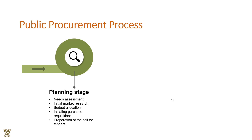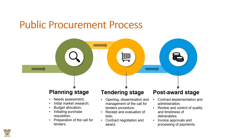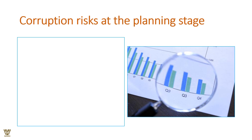Public procurement involves three stages: the planning stage — covering needs assessment, market research, budget allocation, and sustainable development goals; the tendering stage — opening and disseminating calls for procedures, receiving and evaluating bids, and contract negotiation; and the post-award stage — contract implementation and administration, review and quality control, timeliness of deliverables, invoice approval, and processing of payment.